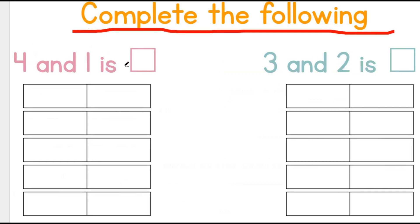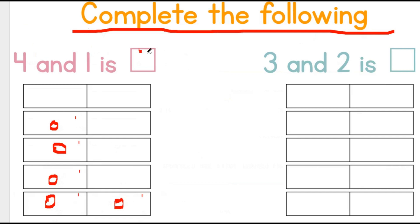Four and one is... Let's count it together: one, two, three, four, five. Four and one is five.